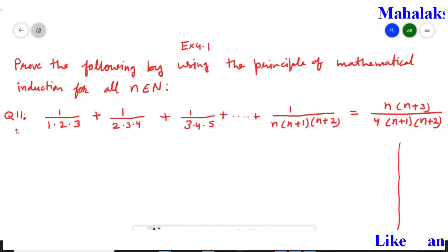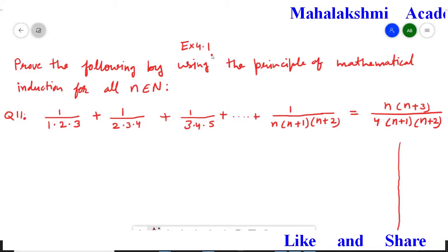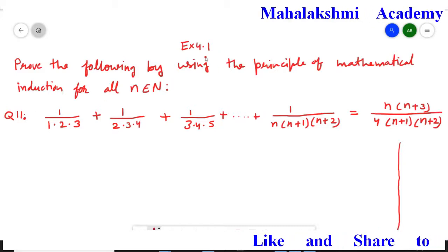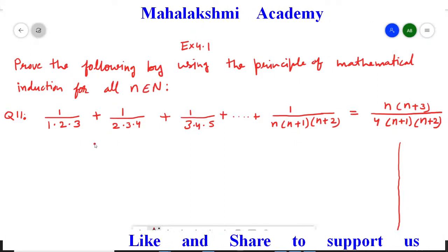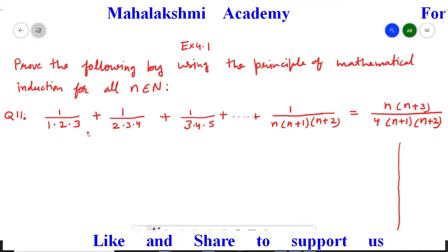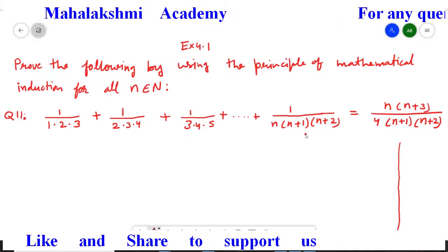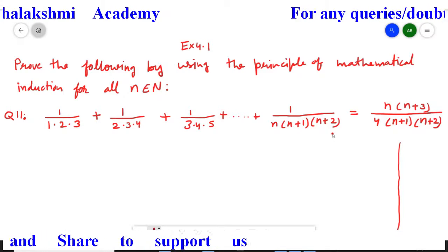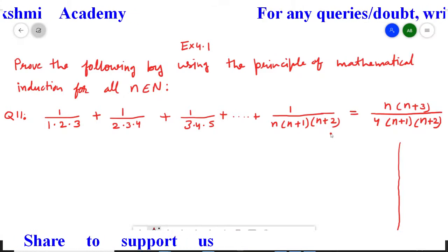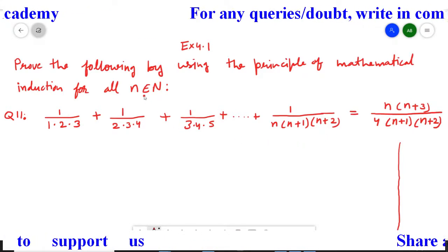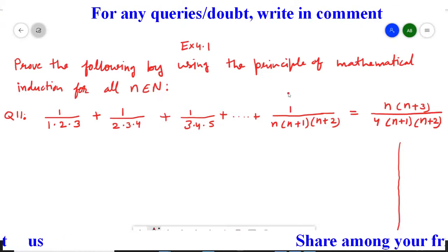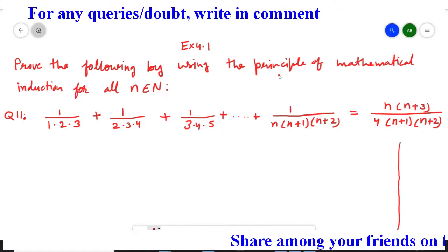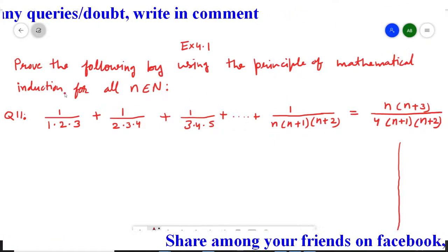Hello everyone. I am going to explain question number 11 from exercise 4.1. This question belongs from class 11 maths. A mathematical statement is given to us and we have to prove that it is true for all natural numbers, and we have to prove this with the help of the principle of mathematical induction.